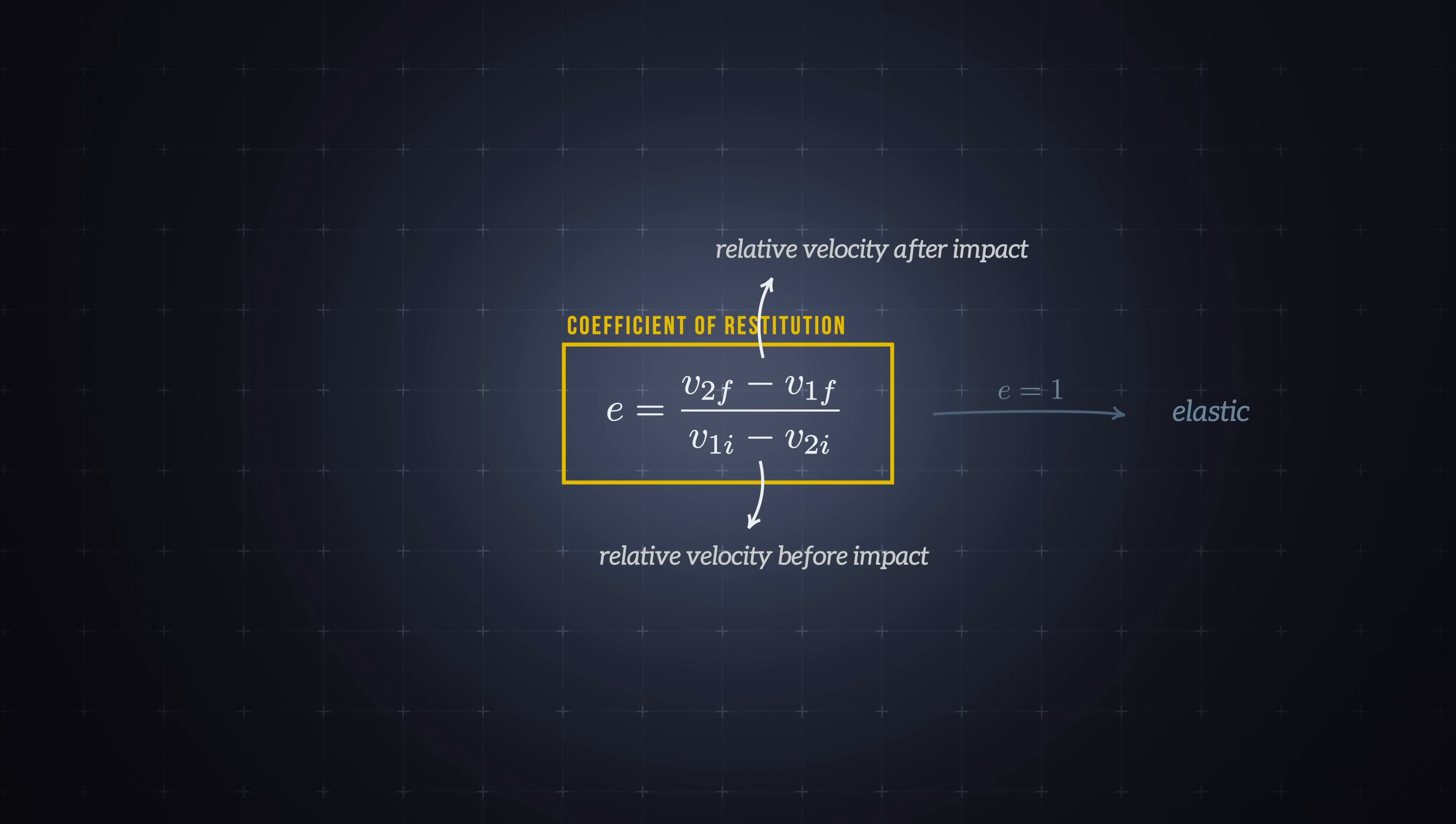A COR of 0 is a perfectly inelastic collision, where the maximum possible amount of kinetic energy is lost, and the objects have the same velocity after the collision. The coefficient of restitution has a big impact on the nature of a collision.